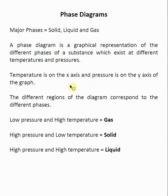The phase diagram in the basic sense will be broken into three different regions, corresponding to the three different major phases. Some of these regions make intuitive sense — at a low pressure and a high temperature, we expect a gaseous phase. If you heat something up it tends to turn into a gas, and if you put it under low pressure like in a vacuum, it will also tend to turn into a gas.